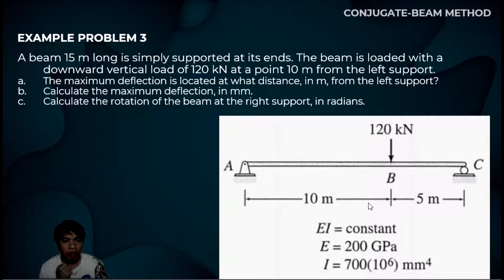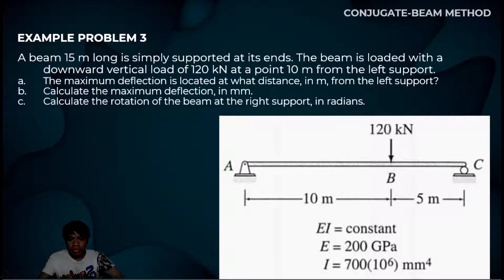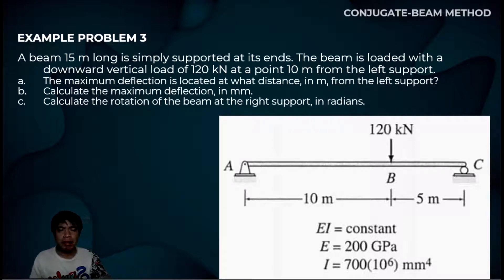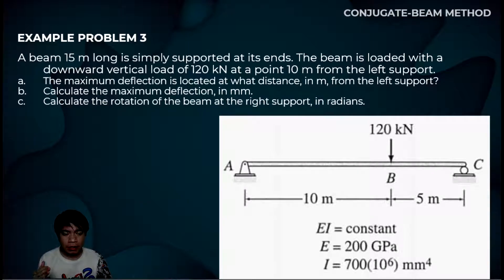If you remember, this problem was also solved using double integration and also using the moment area method. I want to emphasize that the same numerical values should come out. The sign from the double integration method and the sign from the conjugate beam method should also be the same. In the moment area method, the signs may differ because the sign convention in the moment area method is different.